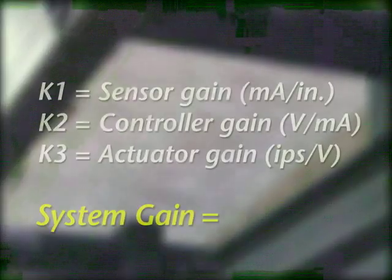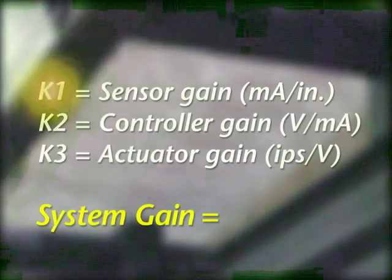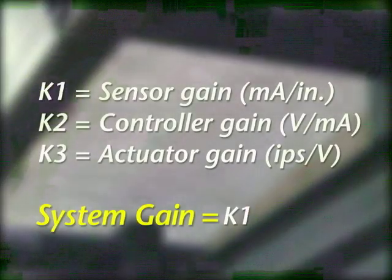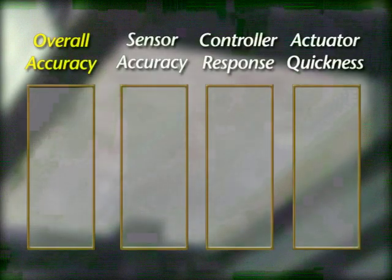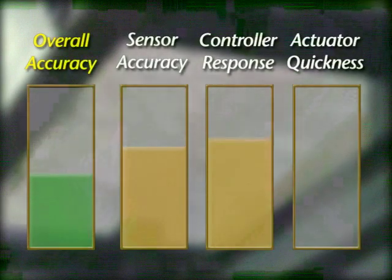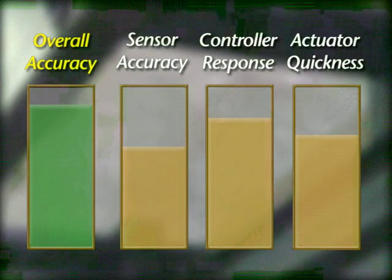The overall accuracy is calculated by multiplying the sensor gain by the controller gain by the actuator gain. This is another way of saying that the more accurate the sensor, the more responsive the controller, and the quicker the action of the actuator, the higher the overall accuracy.